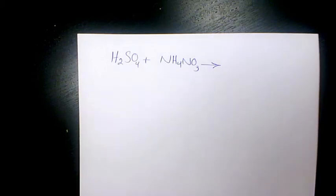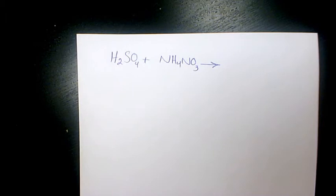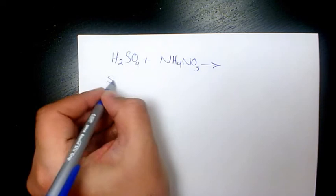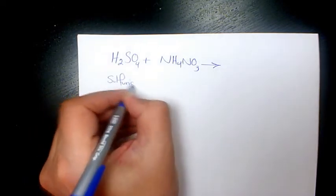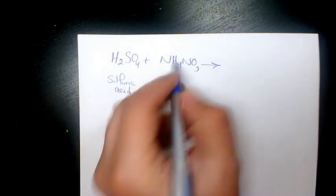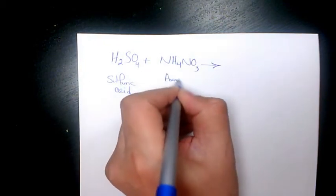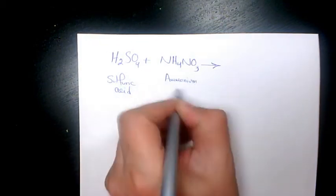What's up guys, this is Massey. In this video I want to show you how to write the products and balance this reaction. Here we have H2SO4 which is sulfuric acid, and NH4NO3 which is ammonium nitrate.